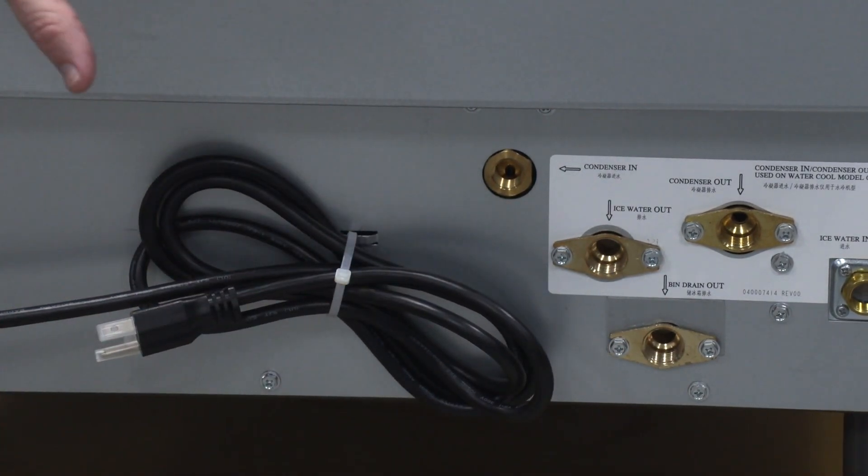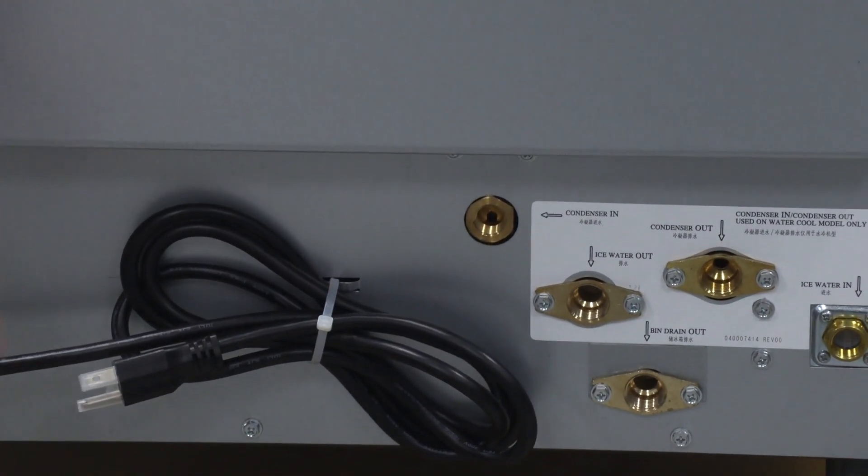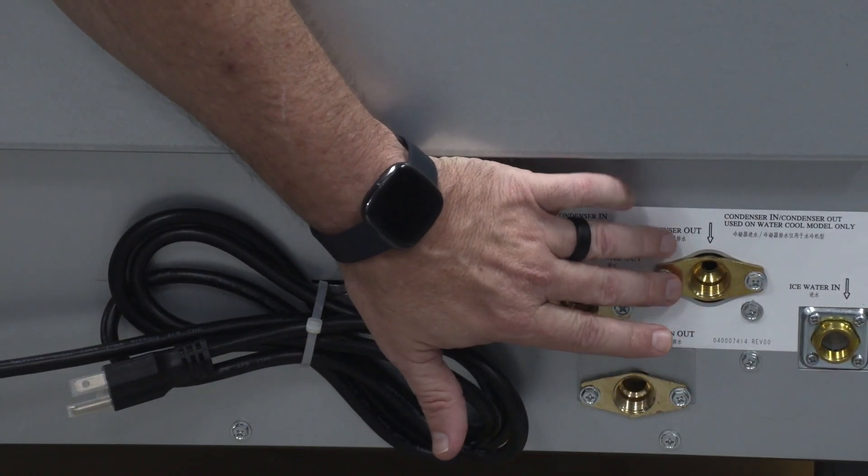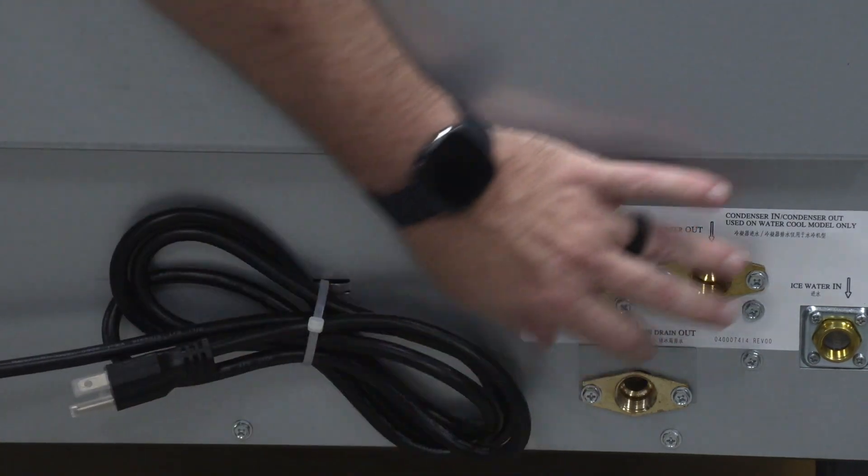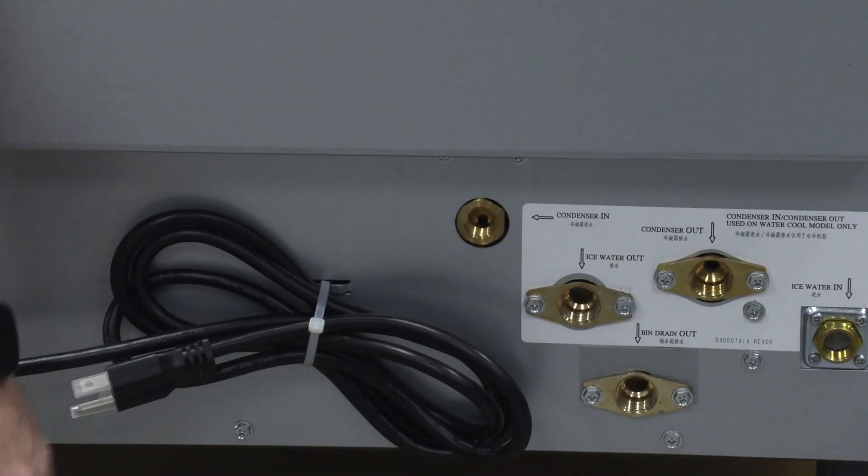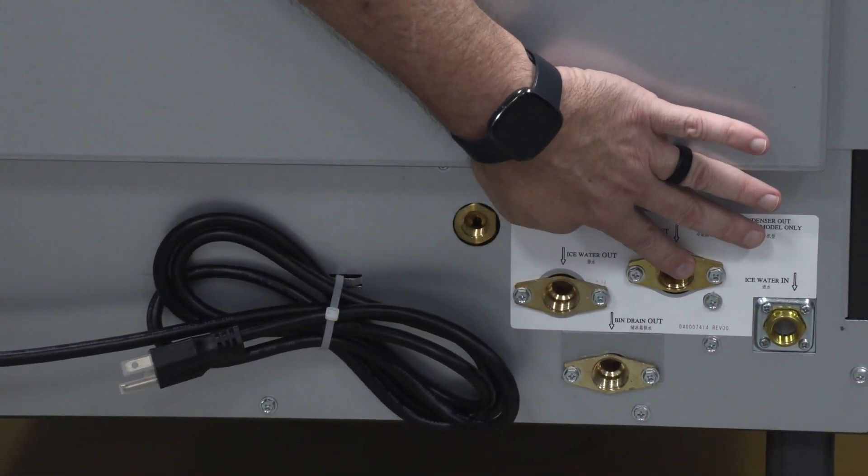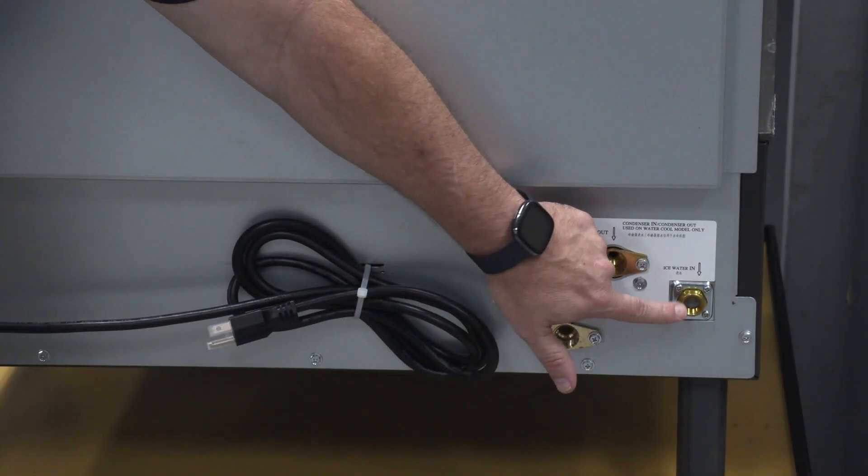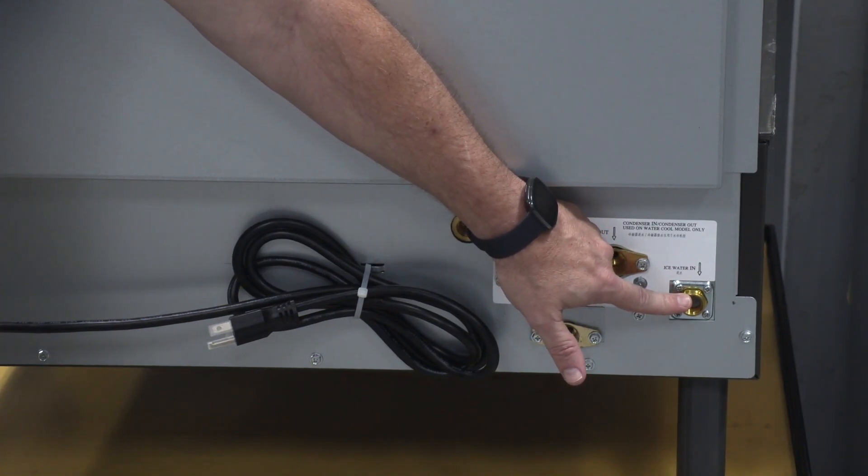Now this is a water cooled machine, so you're going to have an additional drain here. This is your water cooled condenser outlet. So yes, on this particular machine, a water cooled, you've got three drains. On an air cooled machine, this one will not be there. You'll just have the ice water out, you'll have the bin drain out, and that's your water inlet on all machines.